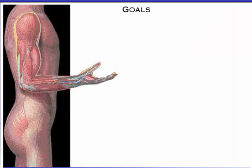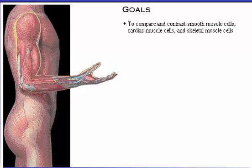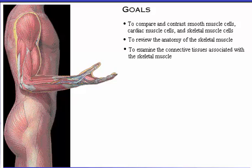Your goals for learning are to compare and contrast smooth muscle cells, cardiac muscle cells, and skeletal muscle cells; to review the anatomy of the skeletal muscle; to examine the connective tissues associated with skeletal muscle; and to review the intracellular organization of the skeletal muscle cell.